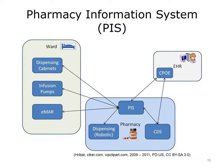The Pharmacy Information System communicates with the EHR and processes and manages orders received from the CPOE. The PIS also communicates with systems within the hospital related to patient care, such as the Electronic Medication Administration Record, or EMAR, which keeps track of administered medications, electronically controlled infusion pumps, and dispensing cabinets.